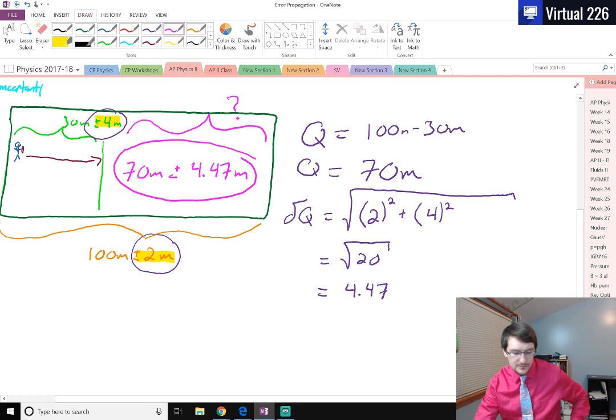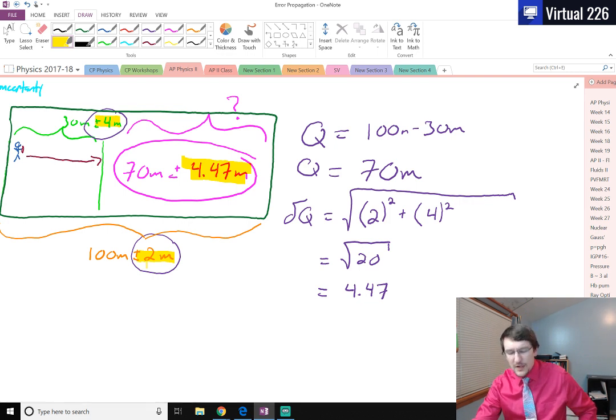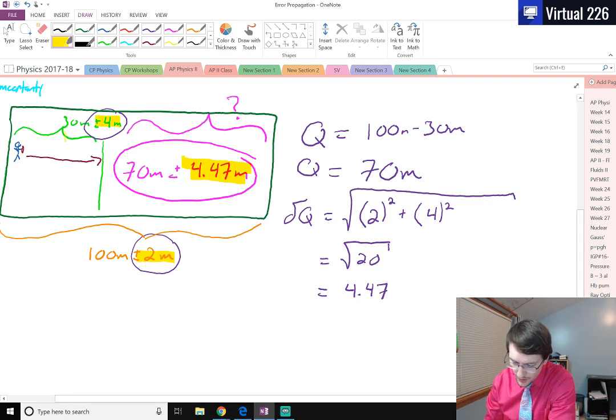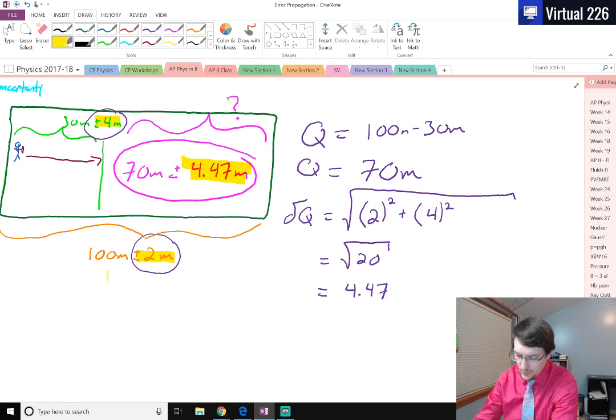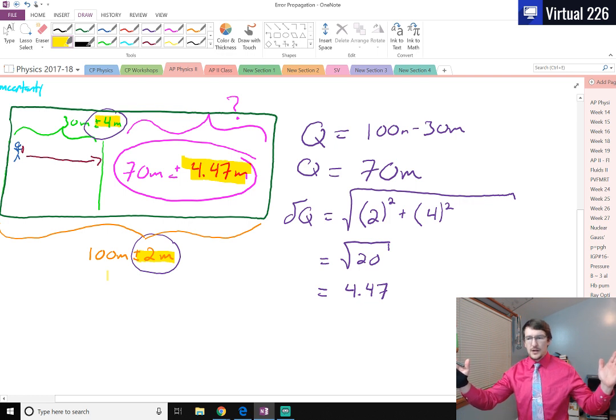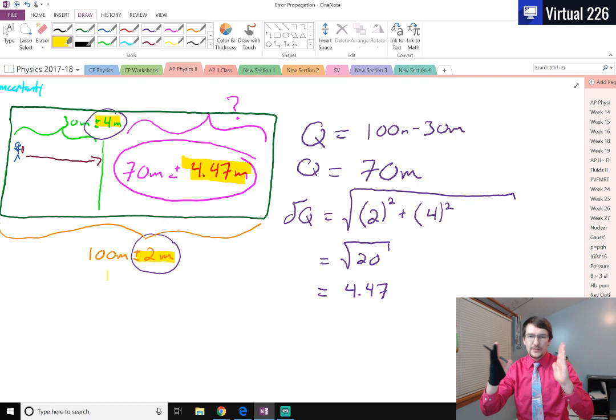You might be wondering how can they have more error than what they initially had on either of these. The way this is possible is this error represents a distribution of what the errors could be. If we were off on the 30 and the 100 meters by the positive amounts, we could be off by a total of positive 6 meters. If they were off by the negative amounts each, they could be off by negative 6. If one is positive and one is negative, that could be plus 2 or minus 2, depending on how they worked out.